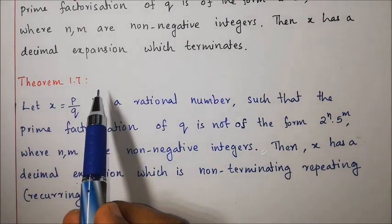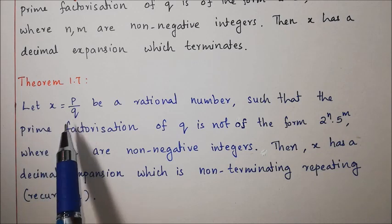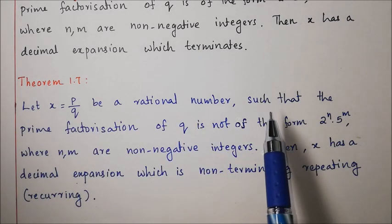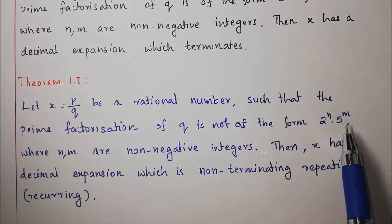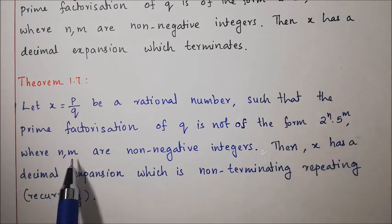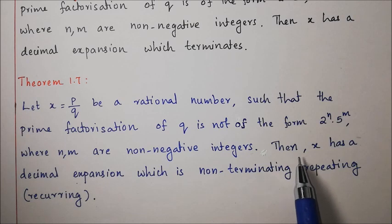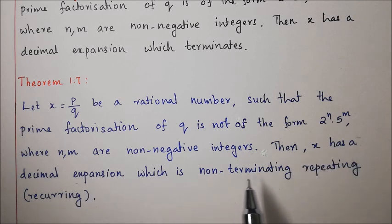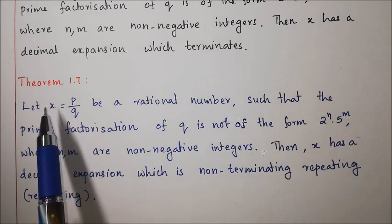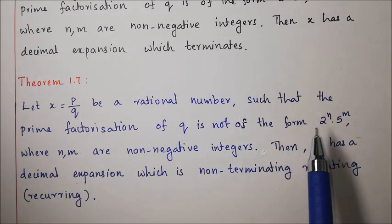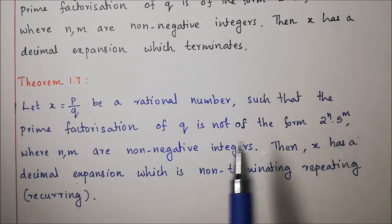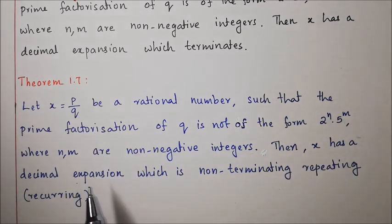Theorem 1.7: Let x = p by q be a rational number such that the prime factorization of q is not of the form 2 to the power n into 5 to the power m, where n and m are non-negative integers. Then x has a decimal expansion which is non-terminating repeating or recurring.